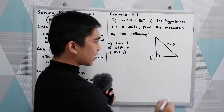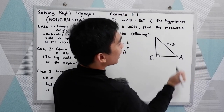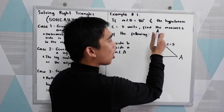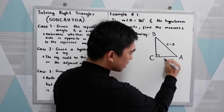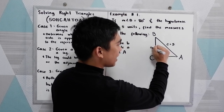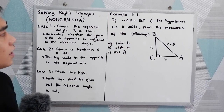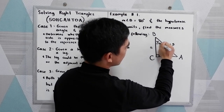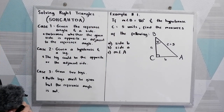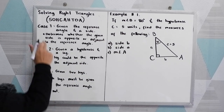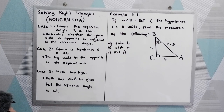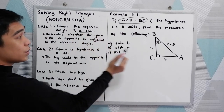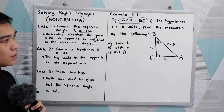So this is our angle C, side C equals 5. This is our vertex A and vertex B. Angle A and angle B — opposite to angle B is side B, and opposite to angle A is side A. Measure angle B is 80 degrees. Reviewing our cases 1, 2, and 3, this falls under case number 1: given the reference angle — which is angle B — and a side, which is the hypotenuse.